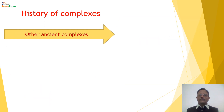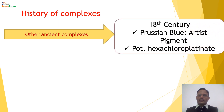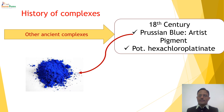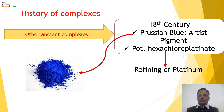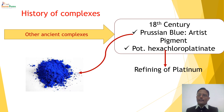Other ancient complexes include 18th century compounds: Prussian blue, known as an artist pigment, and potassium hexachloroplatinate. Prussian blue was used by artists for painting, whereas potassium hexachloroplatinate was used for refining of platinum. Those were the days when metallurgical advances were ongoing and large-scale metal extractions, including gold and platinum, were taking place.